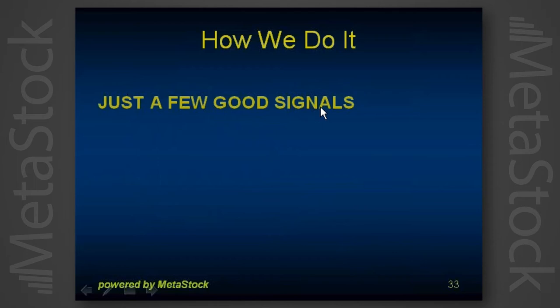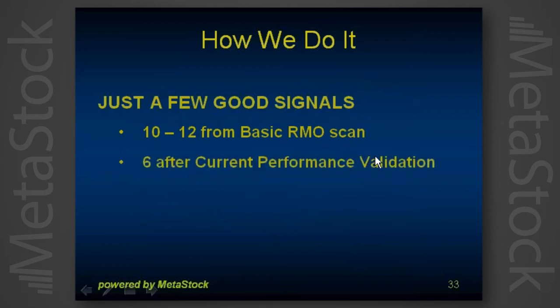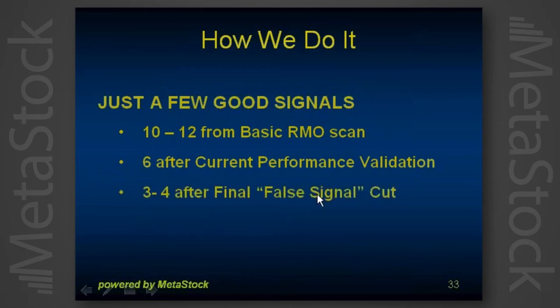Following our own advice of just a few good signals: we start and get about 10 to 12 from the basic RMO scan, then knock out six after validating each one, cutting down to six. Then we knock the six down to three or four after the final false signal cut. It's all about getting down to three or four signals a day. Four is our absolute max — we never go out with more than four signals a day.